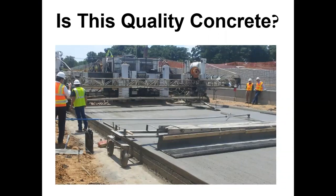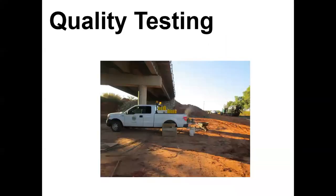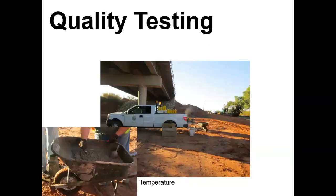You know, it looks like they're doing everything right, but how do you exactly know? How do you know the strengths are going to be there? Well, you've got to test for it. For ACI Field Grade 1, or if you work with a DOT, they're going to have something very equivalent — a series of tests.